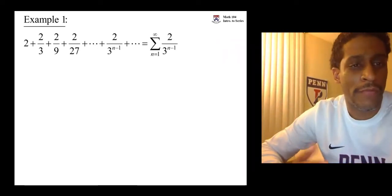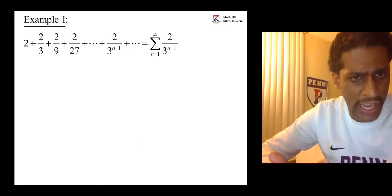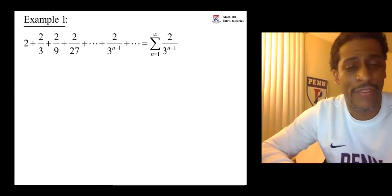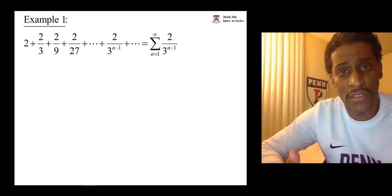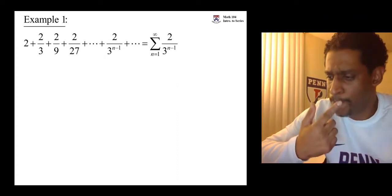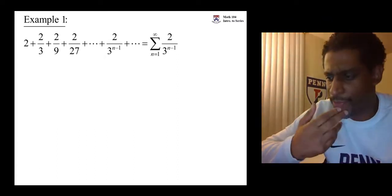First up, we have 2 plus 2 thirds plus 2 ninths plus 2 over 27 and on forever. We have to figure out why is it a geometric series? Does it converge or diverge? If it converges, what does it converge to?